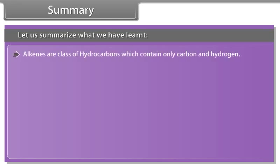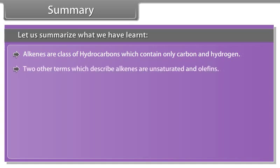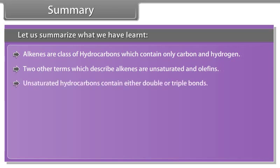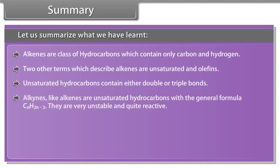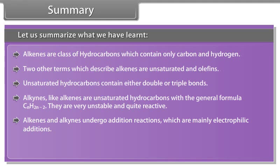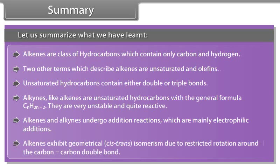Summary: alkenes are a class of hydrocarbons which contain only carbon and hydrogen. Two other terms which describe alkenes are unsaturated and olefins. Unsaturated hydrocarbons contain either double or triple bonds. Alkynes, like alkenes, are unsaturated hydrocarbons with the general formula CnH(2n-2). They are very unstable and quite reactive. Alkenes and alkynes undergo addition reactions, which are mainly electrophilic additions. Alkenes exhibit geometrical cis-trans isomerism due to restricted rotation around the carbon-carbon double bond.